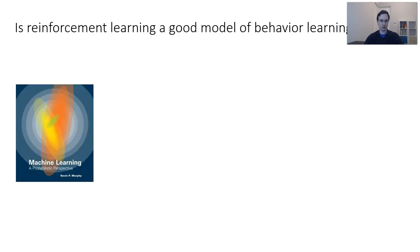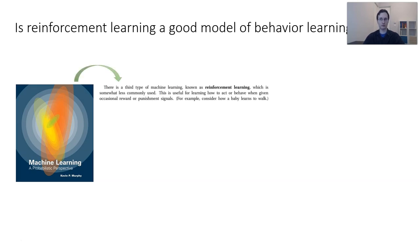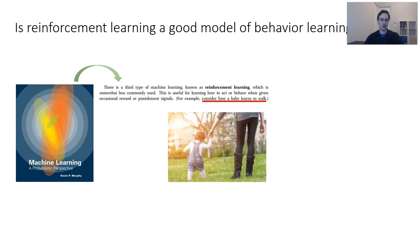If we look up the definition of reinforcement learning in a wonderful textbook on machine learning by Kevin Murphy, it says reinforcement learning is useful for learning how to act or behave when given occasional reward or punishment signals — for example, consider how a baby learns to walk. But if we actually consider how a baby learns to walk, I think it's very far-fetched to imagine that babies learn to walk through reward and punishment. Babies are provided by their parents with everything they need to survive — they don't need to learn how to walk in order to get by. So if babies go through all the trouble to learn to walk, they're certainly not doing it due to reward and punishment.